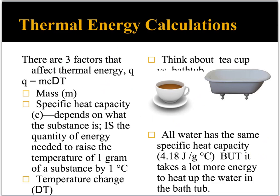There are three factors that affect the amount of heat energy in a system. We calculate heat energy using the formula Q = MC delta T. The factors that affect it are mass, specific heat capacity, and temperature. Mass is the amount of matter in an object. Specific heat capacity depends on what the substance is — it's the amount of heat energy needed to raise the temperature of one gram of a substance by one degree Celsius. Delta T is temperature change.